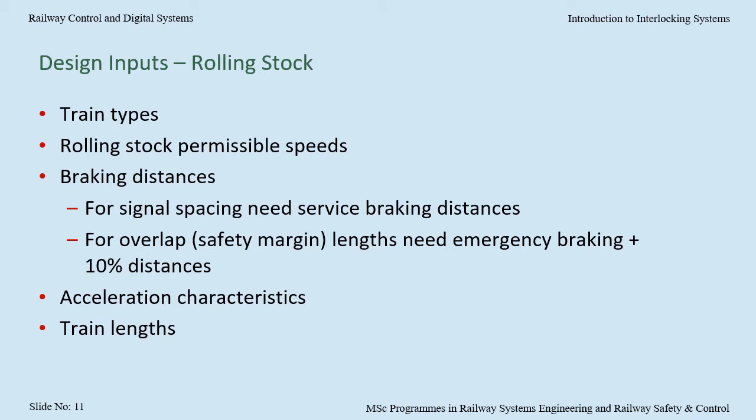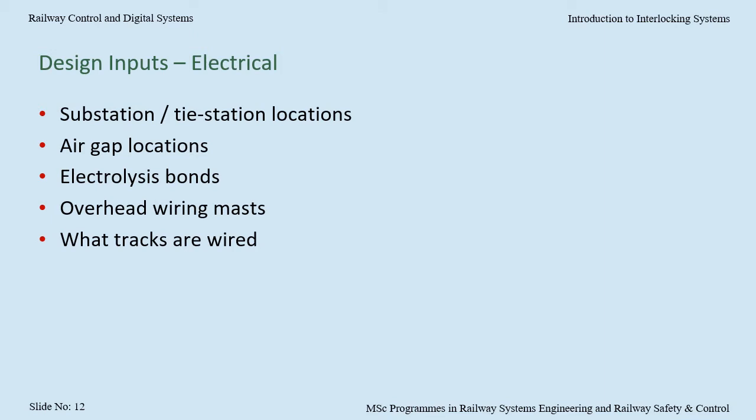For rolling stock, I need to know the train types and for each train type its permissible speeds, braking distances, service braking distances for signal spacing, and where using fully braked overlaps, the emergency braking so I can add safety margins to get my overlap lengths. I also need acceleration characteristics and train lengths. From the electrical and traction people, I need to know substation and tie station locations and electrolysis bonds, as where those cables are connected to the rails will affect where I can place the ends of some types of track circuits.